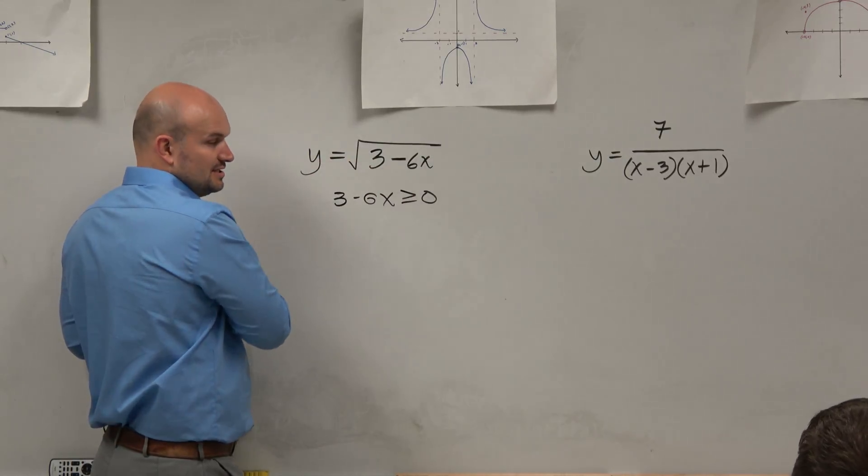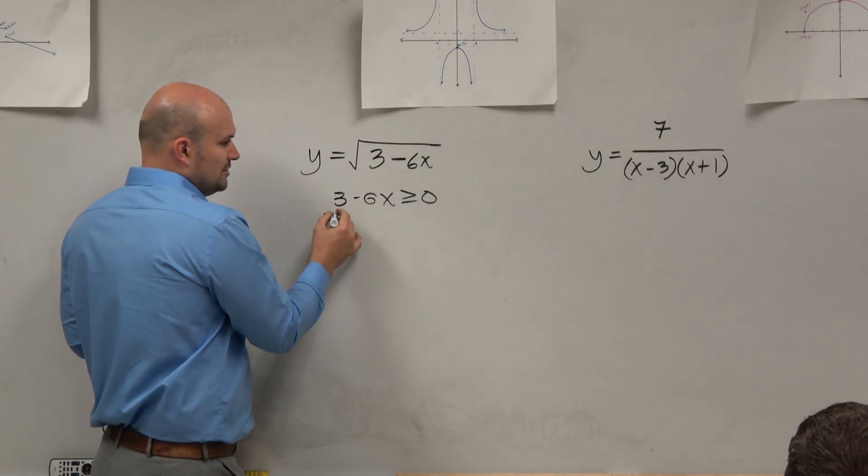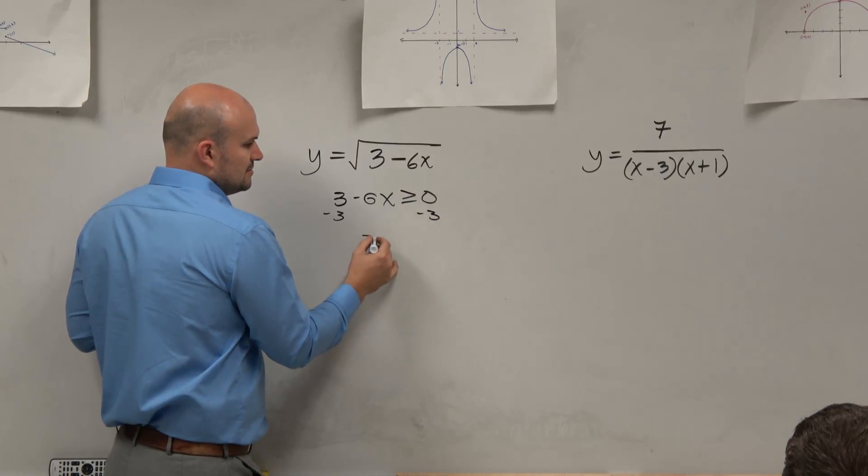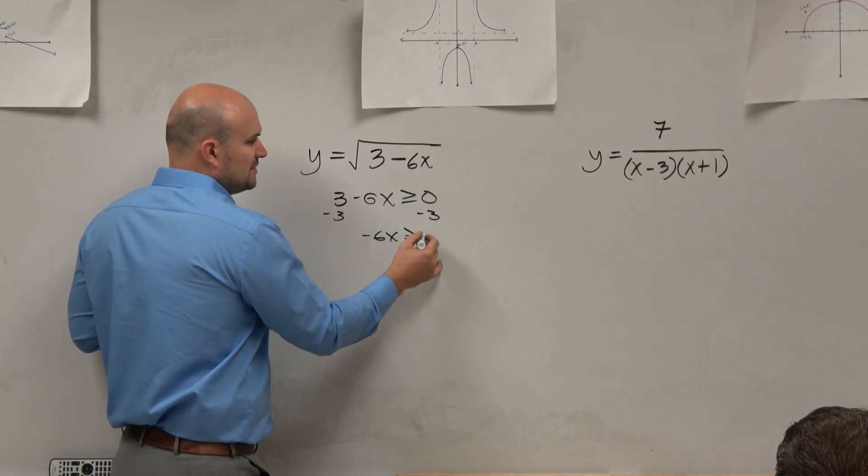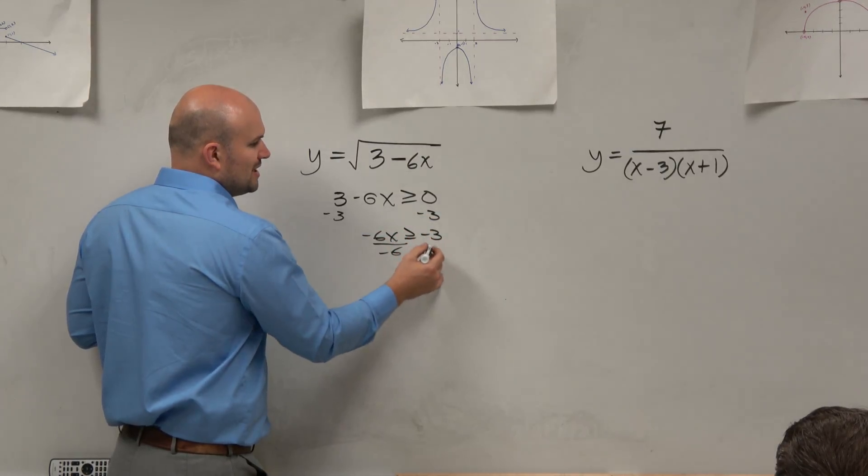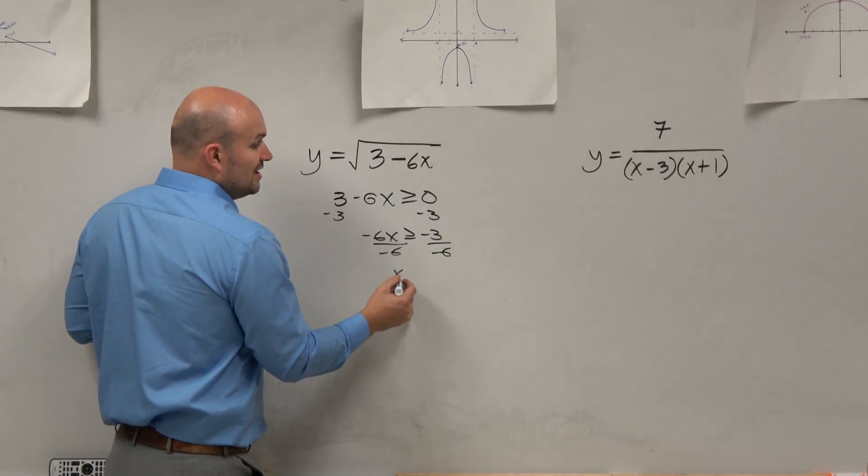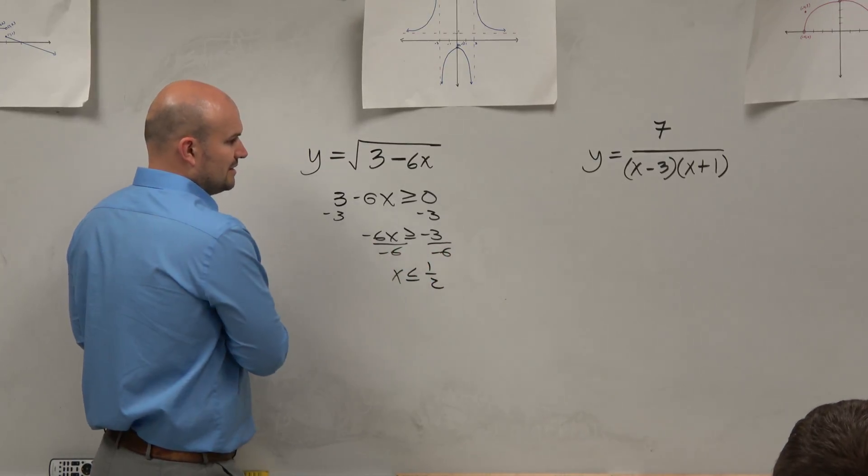Now there's a couple different ways. You could add the 6 to the other side if you wanted to, or you could use inverse operations. Just remember, if you're going to use inverse operations, when you multiply or divide by a negative number, you have to flip the sign, OK?